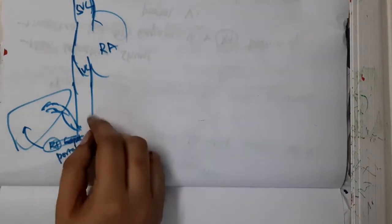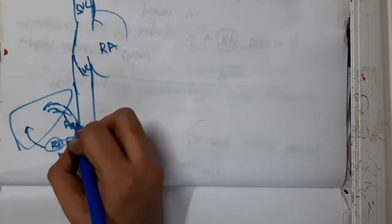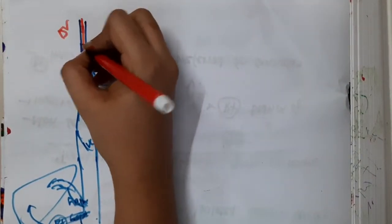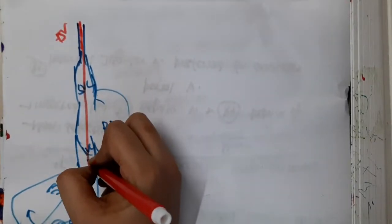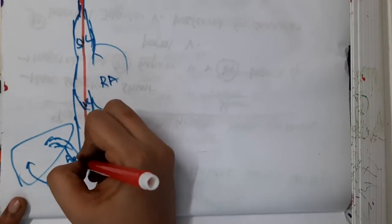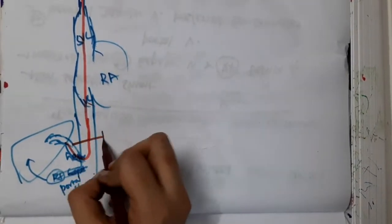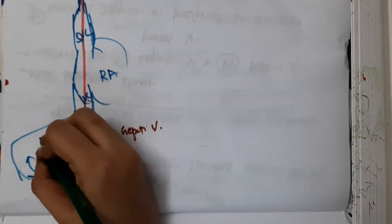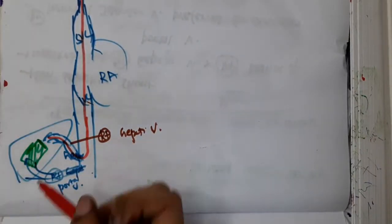First you go into the hepatic vein — passing the catheter from the internal jugular vein to the superior vena cava, then the inferior vena cava, and then into the right hepatic vein. From there, you pass the catheter through to the portal vein, and you put a shunt between the right hepatic vein and the portal vein. This is the shunt that is placed.